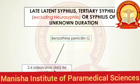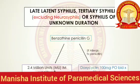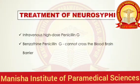We give the first dose of 2.4 million units of benzathine penicillin G at week one, repeat the same dose at week two, and again at week three. So we give 3 doses separated by one week. Alternatively, if a patient can't tolerate penicillin, we give doxycycline at a dose of 100 mg per oral twice a day for 28 days.